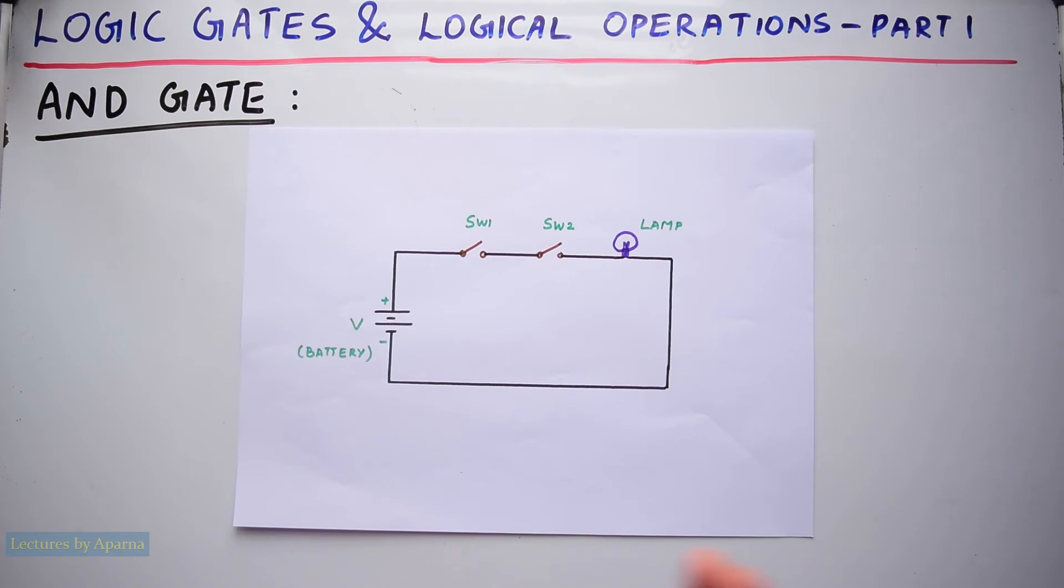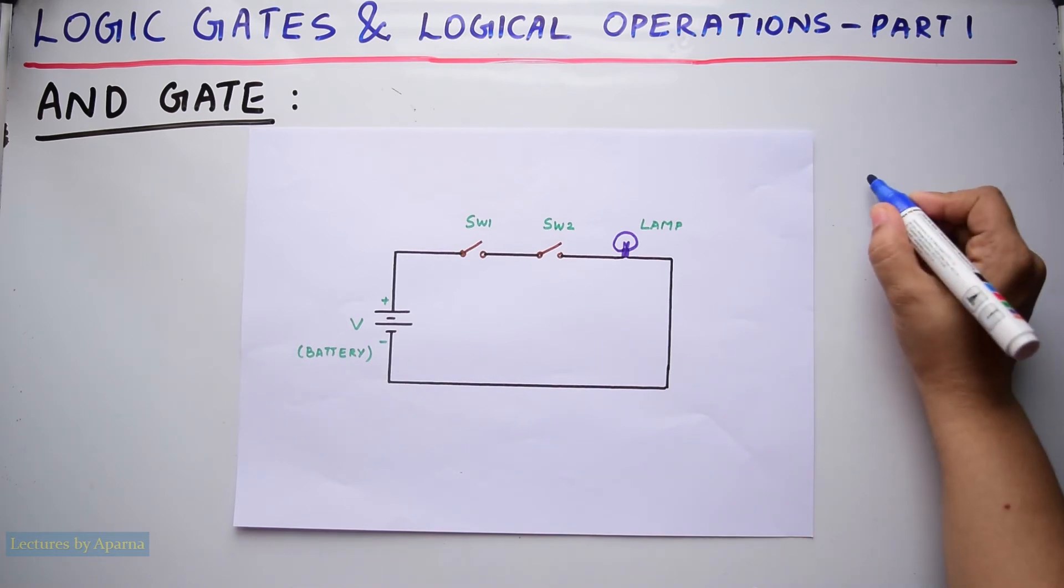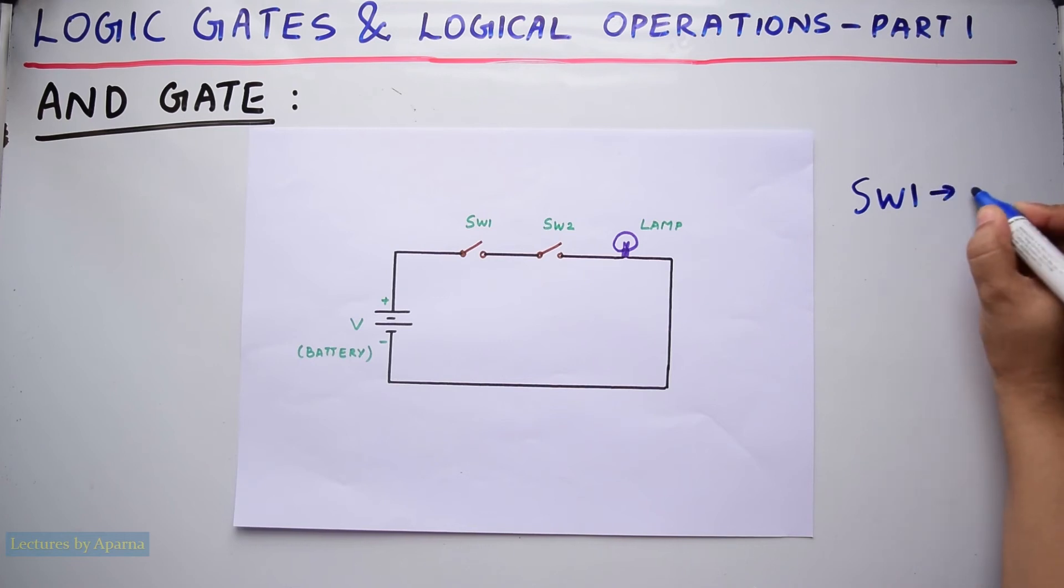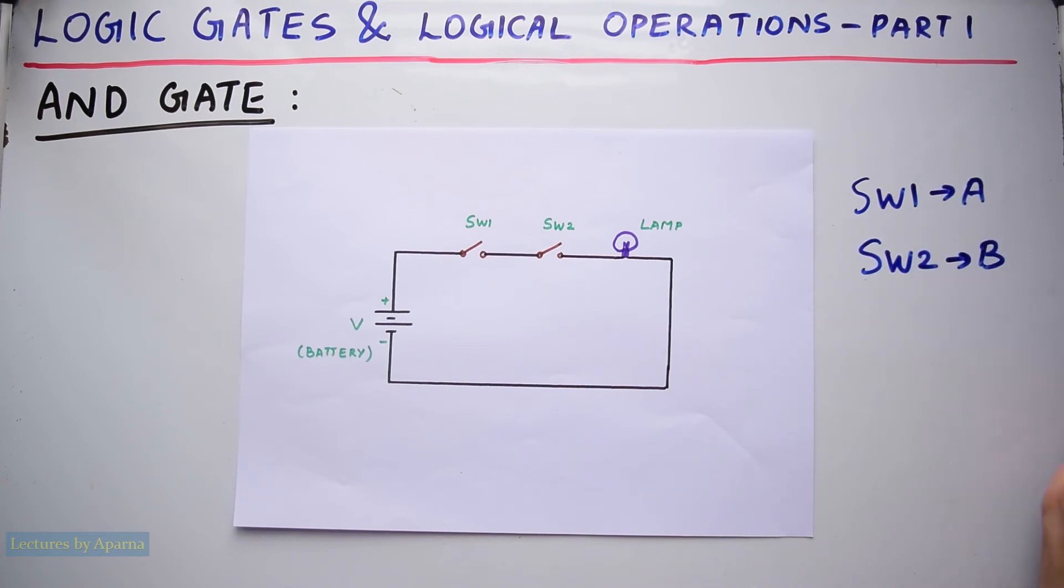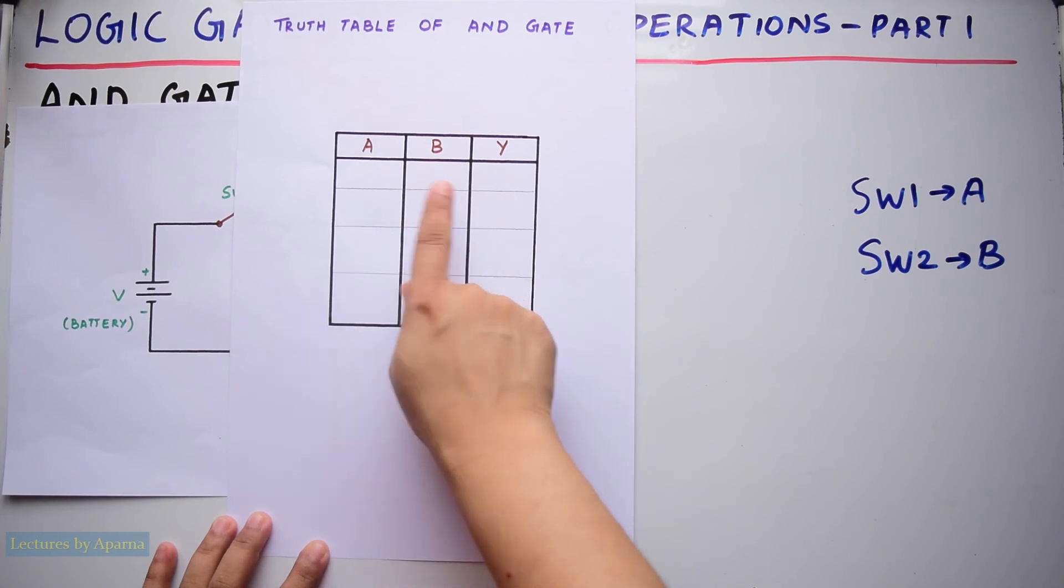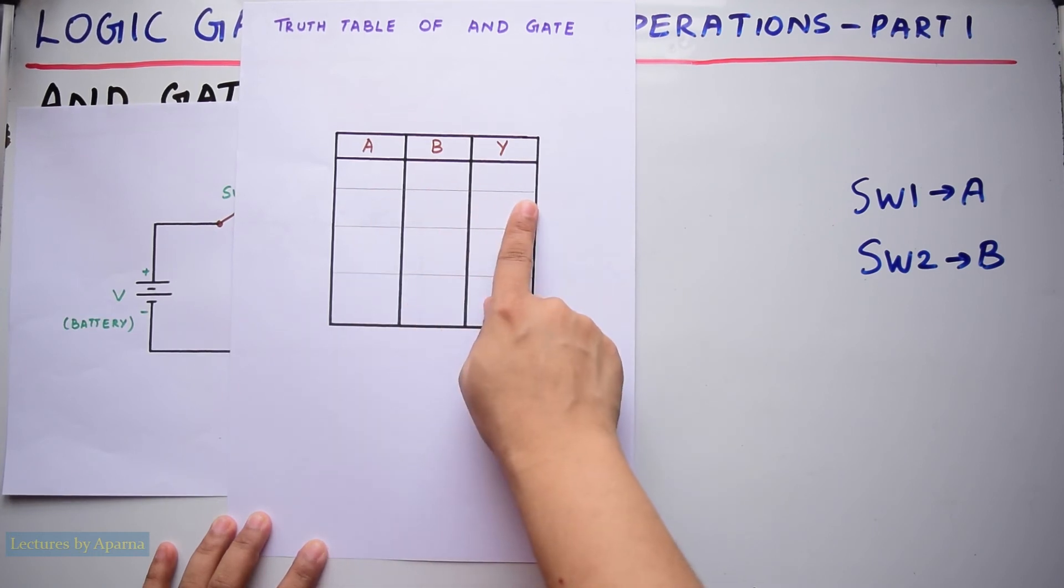Now we are considering these two switches as the two binary values that are inputs to the AND gate. Let switch 1 represent input A and switch 2 represent input B. Now we will write a truth table for this AND operation. A and B are two inputs and Y is the output.